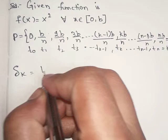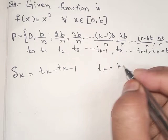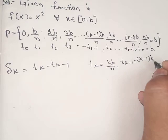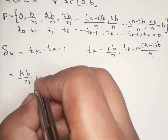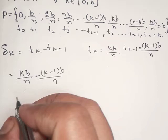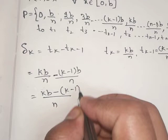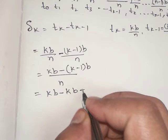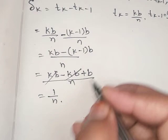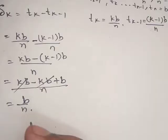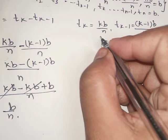Now we take Δk = tk - t_{k-1}. From this, tk = kb/n and t_{k-1} = (k-1)b/n. Taking tk - t_{k-1}: kb/n minus (k-1)·b/n, which gives kb - (kb - b) all over n. The kb terms cancel, leaving b/n.